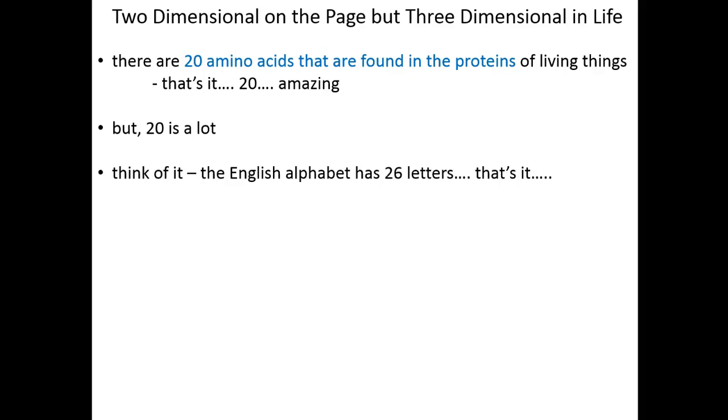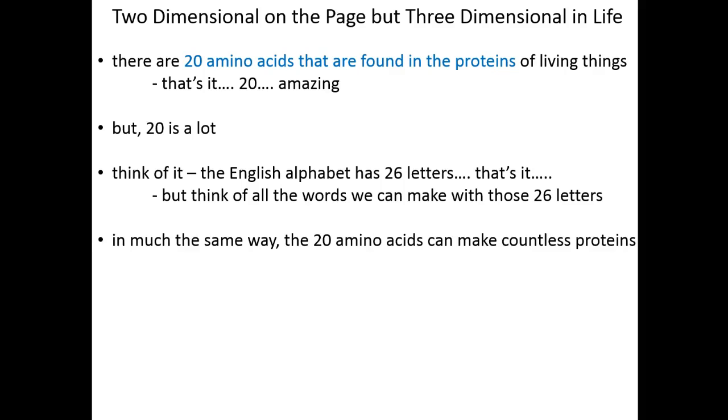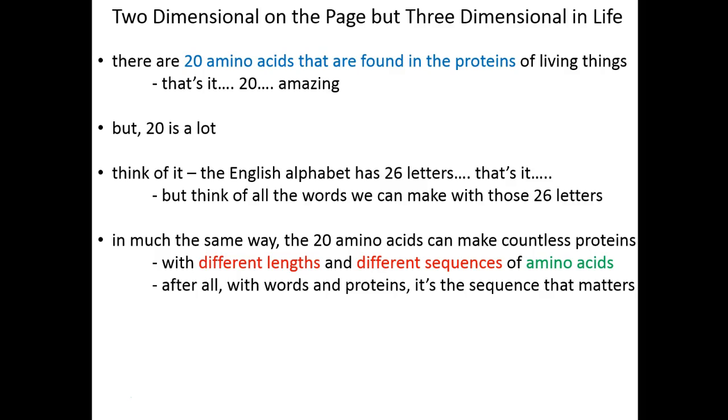Our English language alphabet has 26 characters in it, letters A through Z, and think of all the words that we can make using nothing more than those 26 letters. And so it works very much the same way with proteins. We can make billions of different proteins by changing the combination of amino acids that we include. So what we can vary is the length of proteins, different numbers of amino acids that we have in there, and the sequence of the amino acids. That's going to be key. The sequence of the amino acids is what gives each protein its unique function.